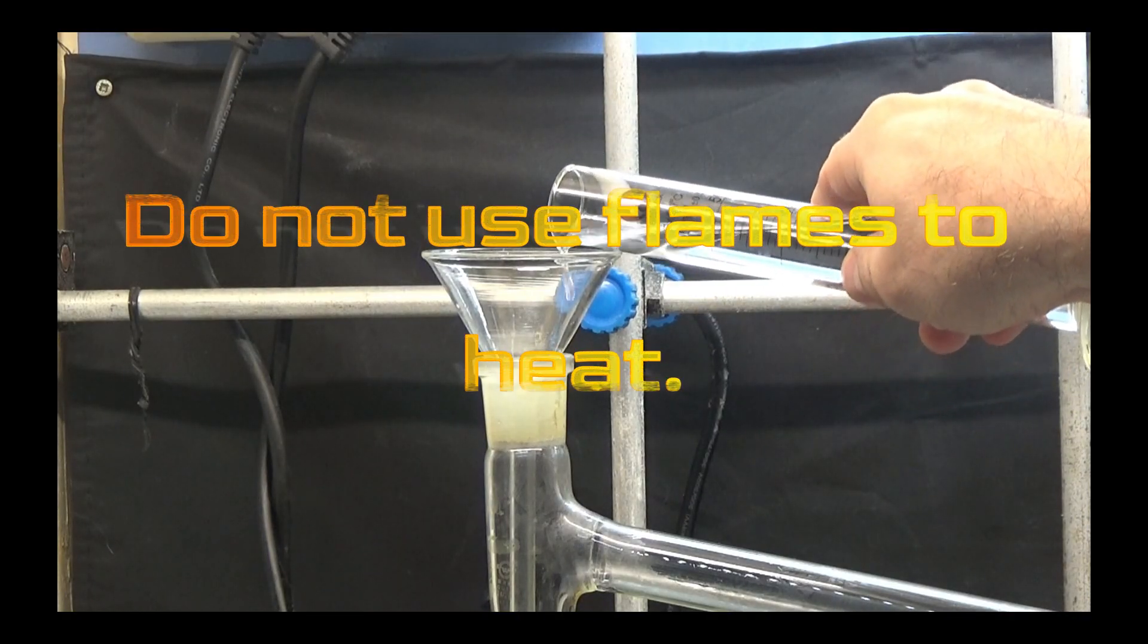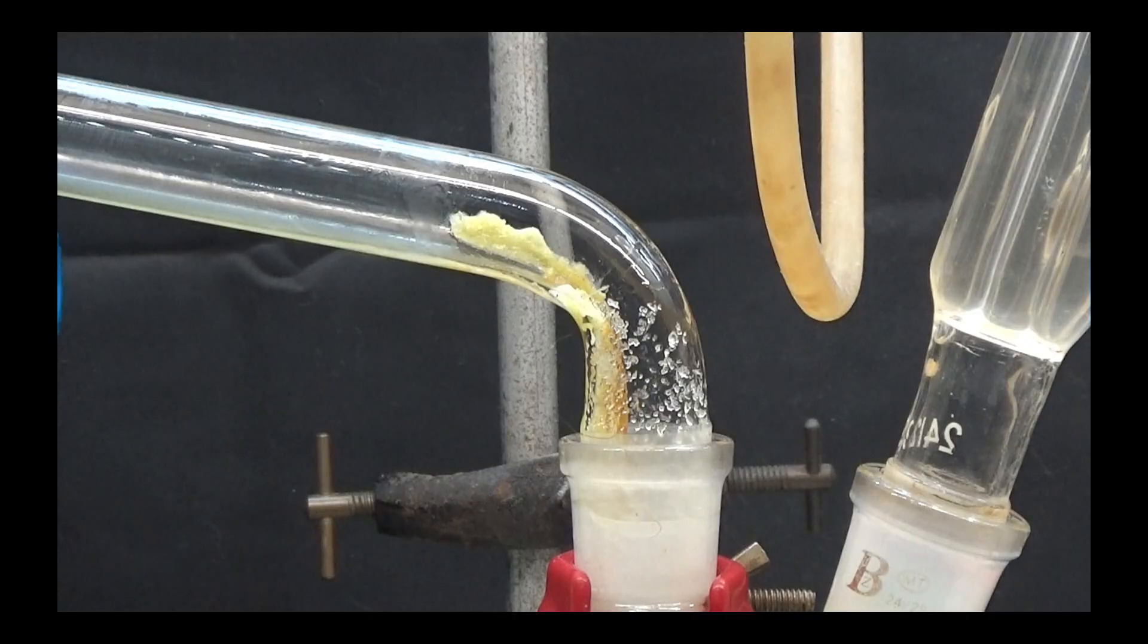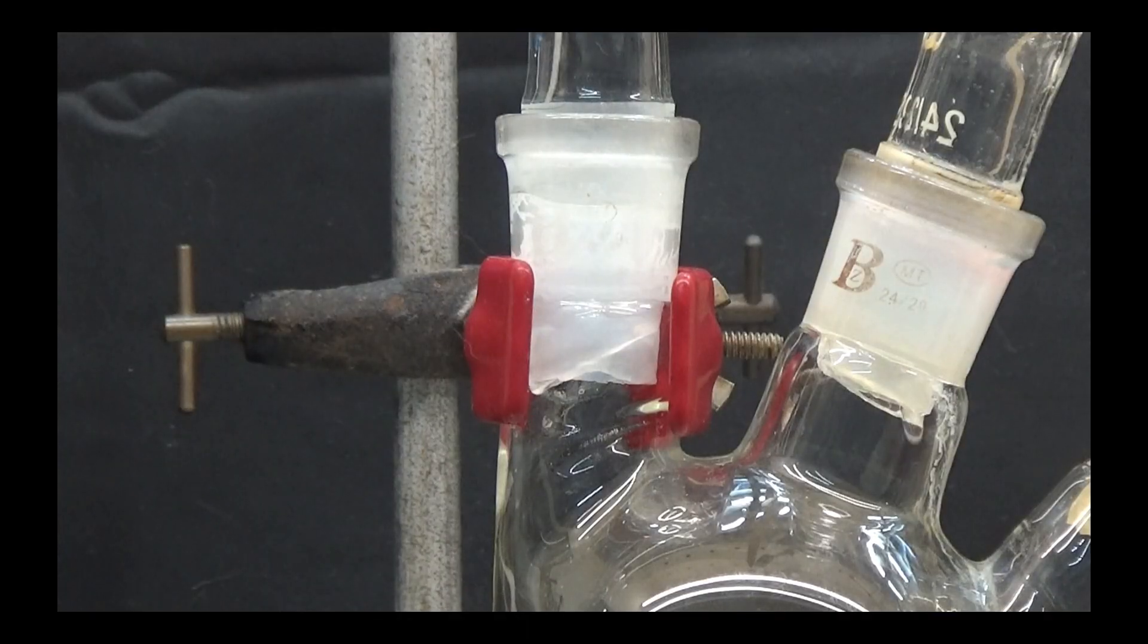If the tube is blocked by the succinamide, cool the distillation flask and distill, with a heat plate, a few ml of acetone that will dissolve the solidified succinamide in the tube.